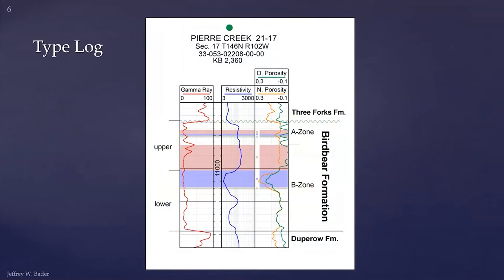The Bird Bear has been broken up into A and B zones based on the type log. We'll be working with these A and B zones today, which are based on sequence stratigraphy and somewhat on lithology. The original designations were for an upper and lower Bird Bear, which do not correspond to the A and B zones, so keep that in mind. We're going to use the A zone and B zone because I'm going to emphasize sequence stratigraphy.